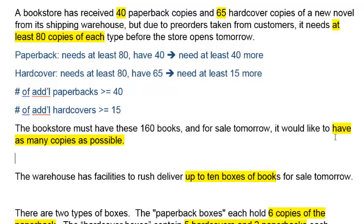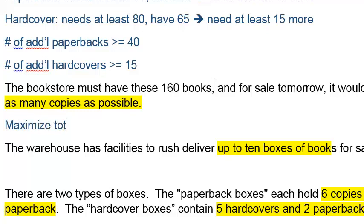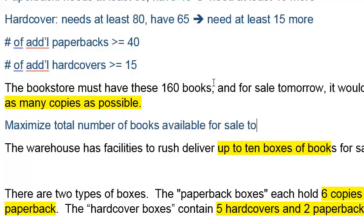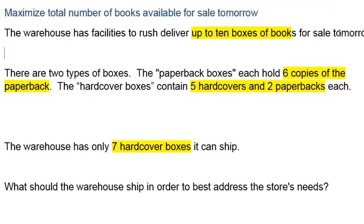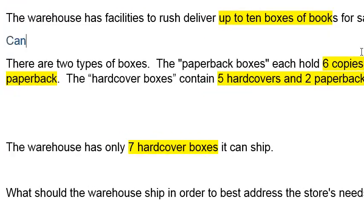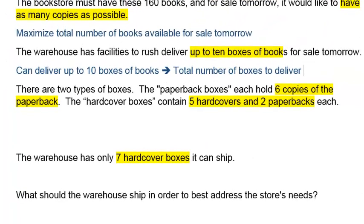Now this part here — you would like to have as many copies as possible — must translate to an objective function because you want to maximize the number of copies. So we might write it as: maximize total number of books available for sale tomorrow. The warehouse could deliver up to 10 boxes of books, so the total number of boxes to deliver must be less than or equal to 10.